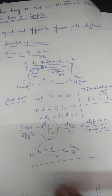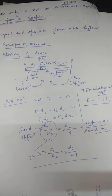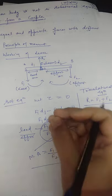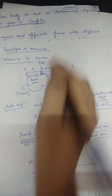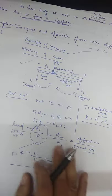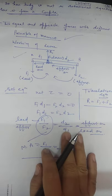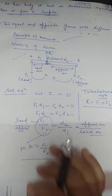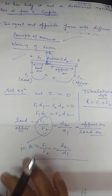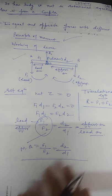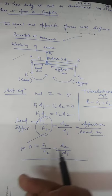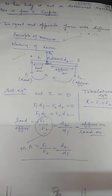So we have discussed three types of equilibrium: translatory equilibrium, rotational equilibrium, and partial equilibrium, including the working of a lever and the concept of a couple. The couple concept will also be discussed in detail in Class 12. In the next video I will explain a few numericals and the concept of center of gravity. Thank you.